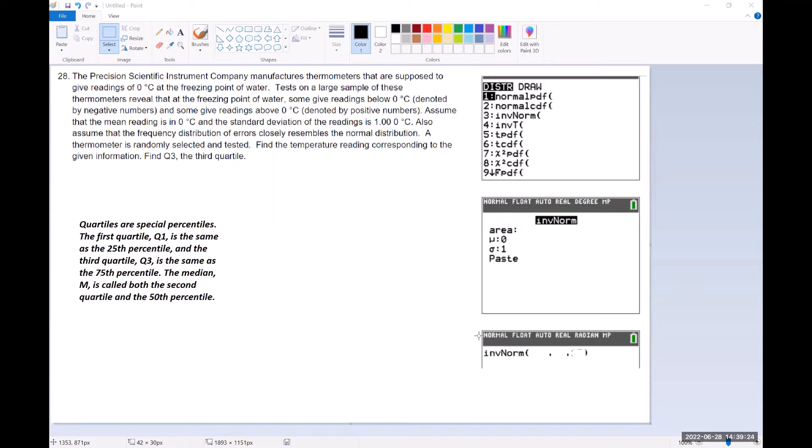A thermometer is randomly selected and tested. Find the temperature reading corresponding to the given information. Find Q3, the third quartile. One of the key features here is based on the mean reading being zero degrees. That means this here is zero—that's the mu.